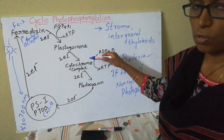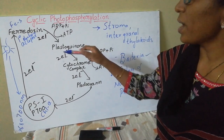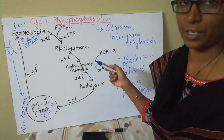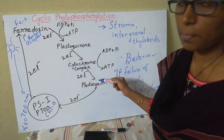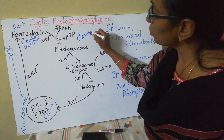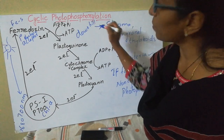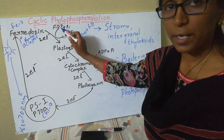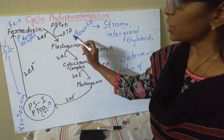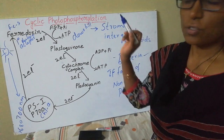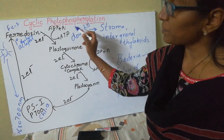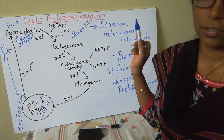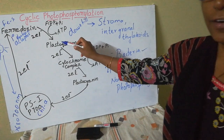From ferredoxin, the electrons pass through plastoquinone. As the electrons pass downhill through the gradient, some energy is released. That energy is trapped by ADP and inorganic phosphate to synthesize ATP. Since this phosphorylation occurs in the presence of light, it is called photophosphorylation.